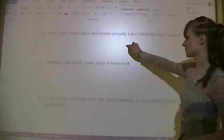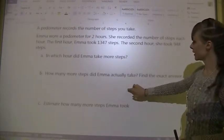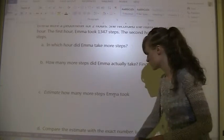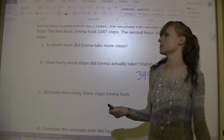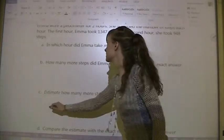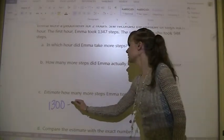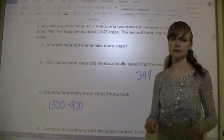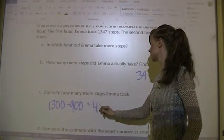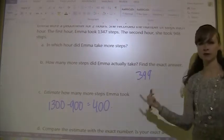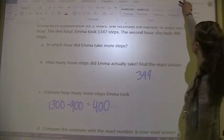Estimate how many more steps Emma took. So now we need to round. I'll round to the nearest hundred. This is 1,300 minus 900. So I just count up from 9 to 13. So 9, 10, 11, 12, 13. That's 400. Look how close 400 is to 399.